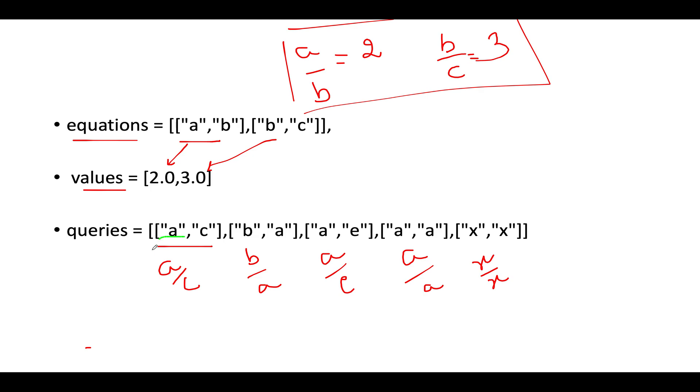Let's understand the queries part. For the first query A/C, we can multiply A/B times B/C. The B in the denominator gets cancelled with B in the numerator, leaving A/C. The value would be 2 times 3. You can figure out that using multiplication across these values, something can be figured out. This equates to 6.